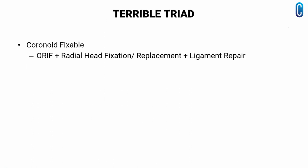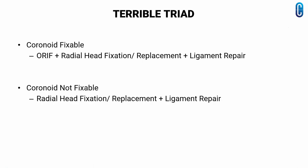If it is a terrible triad injury and if the coronoid is fixable, open reduction and internal fixation is done along with radial head replacement or fixation and ligament repair. In cases with no fixable coronoid, we have to fix or replace the radial head along with ligament repair. In either case, if the elbow is unstable, fix with an external fixator.